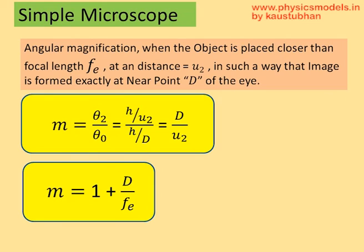Therefore, we have the magnification, the angular magnification as the new angle subtended by the image theta 2 divided by the previous angle subtended theta 0 without any microscope that becomes h by u2 divided by h by d, that's d by u2.